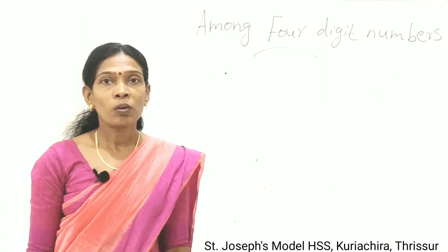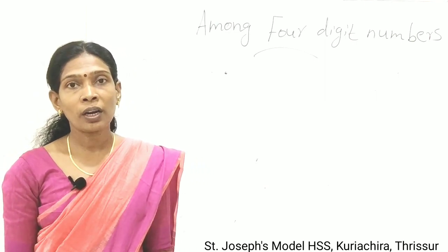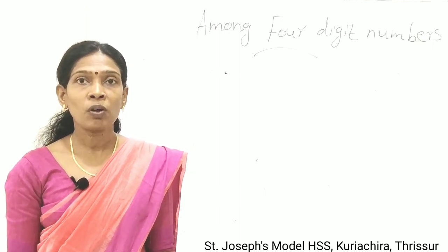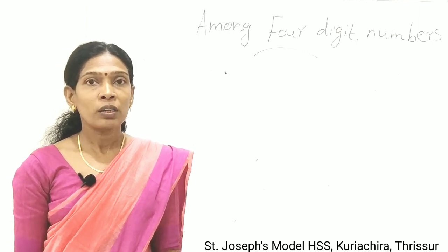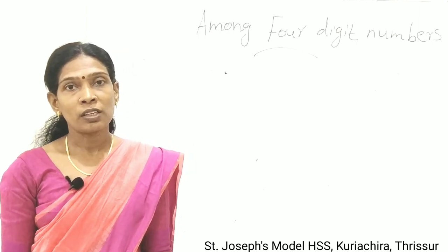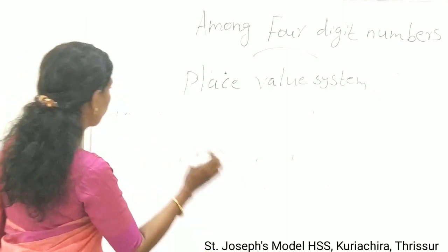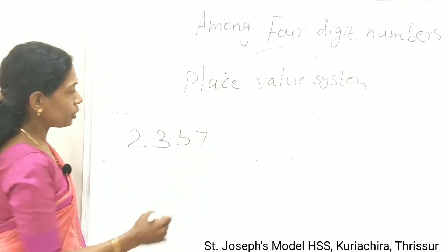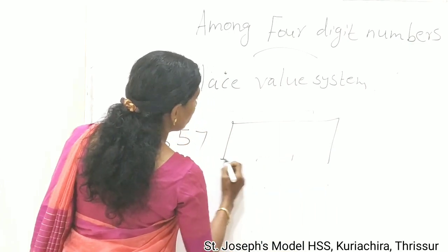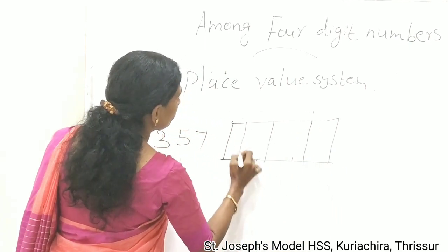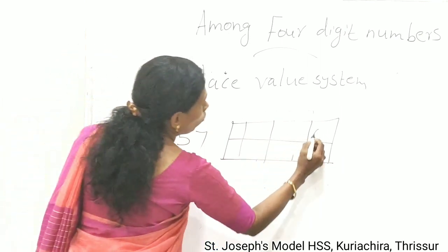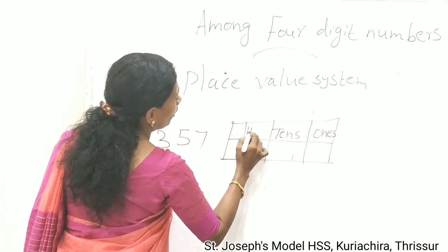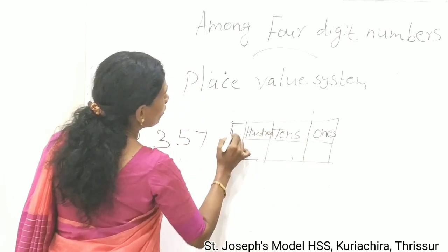Now we discuss how to read and write a 4 digit number. For that it is better to follow the place value system. Based on each place, each digit has its own value. We arrange the places as: ones, tens, hundreds, and thousands.